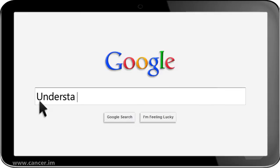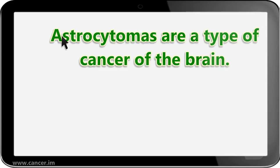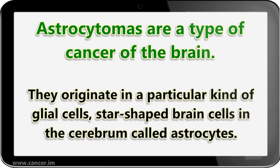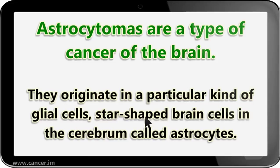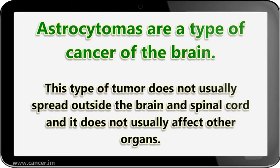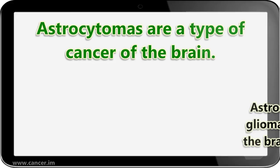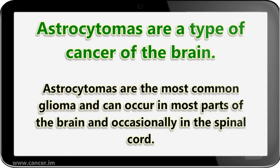Hi, I'm going to talk about understanding astrocytomas. Astrocytomas are a type of cancer of the brain. They originate in a particular kind of glial cells — star-shaped brain cells in the cerebrum called astrocytes. This type of tumor does not usually spread outside the brain and spinal cord and it does not usually affect other organs. Astrocytomas are the most common glial tumors and can occur in most parts of the brain and occasionally in the spinal cord.